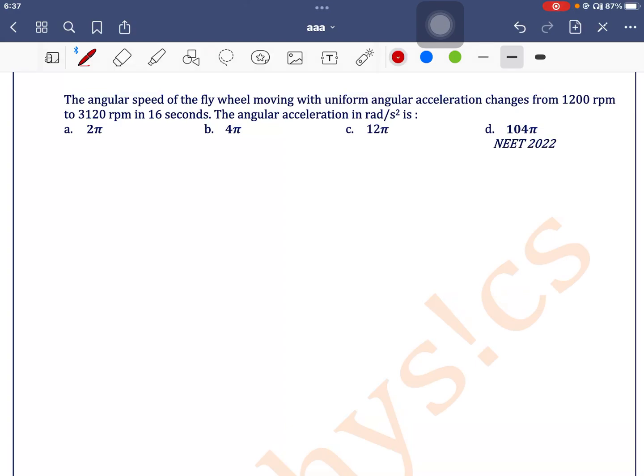The angular speed of the wheel moving with uniform acceleration changes from 1200 rpm to 3120 rpm in 16 seconds. The angular acceleration in radian per second square is asked to find.